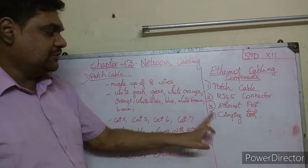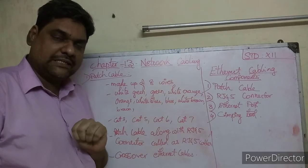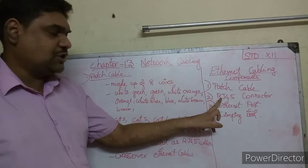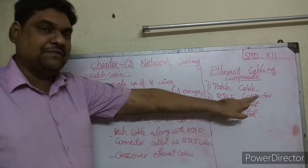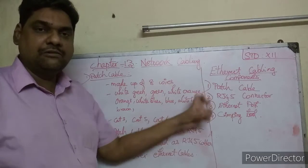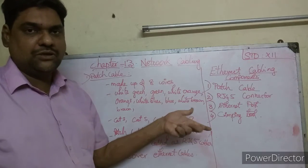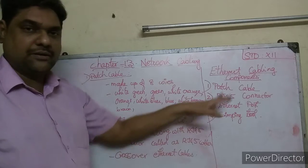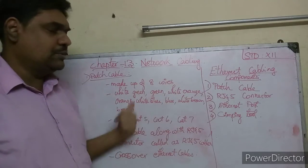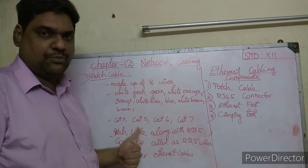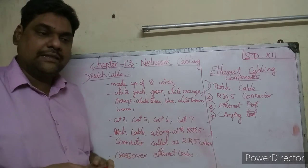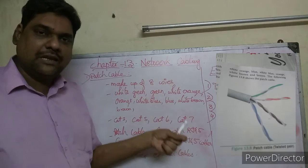To connect using ethernet cables, there are four components in the ethernet cables: patch cable, RJ45 connector, ethernet port, and crimping tool. These are important - two marks each. So first, the patch cable - it is the cable where three wires are inside.